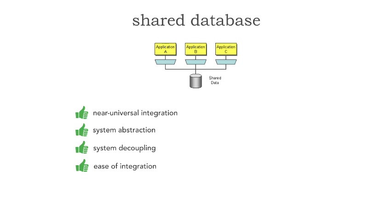The system level of abstraction here is fairly high in the sense that applications A, B, and C can be on any kind of platform. A can be on a separate platform and language than application B, and application C can be on a different platform as well. So we get a high level of system decoupling. With shared database, I can be application A interacting with the database, up and running, and not dependent on application C or application B being available at all.